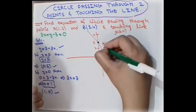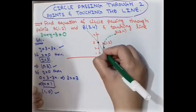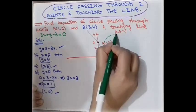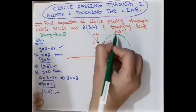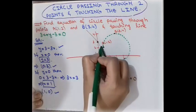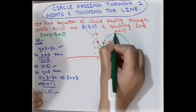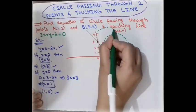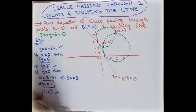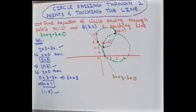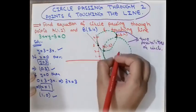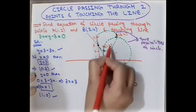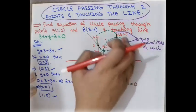There are two possibilities. If these two points are given, then one possibility of the circle is in one form, and the other possibility is another form. So there are two possible circles that satisfy the given condition: a circle passing through the two points and touching the line.